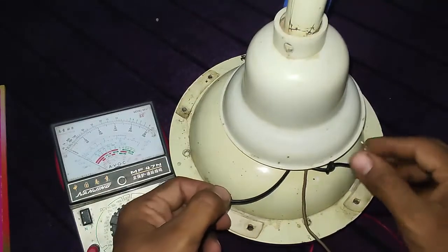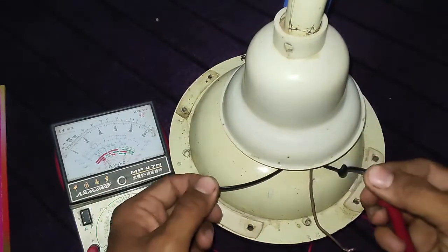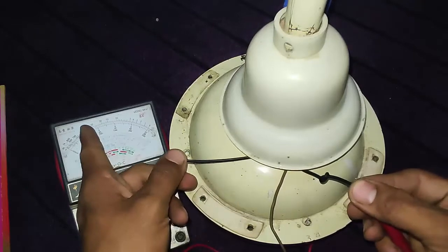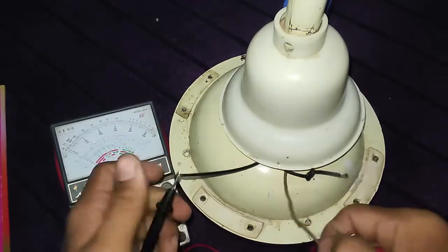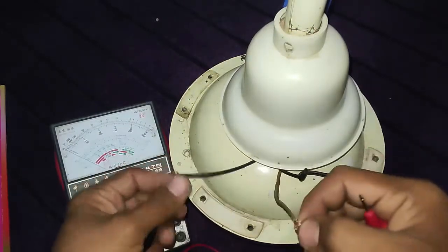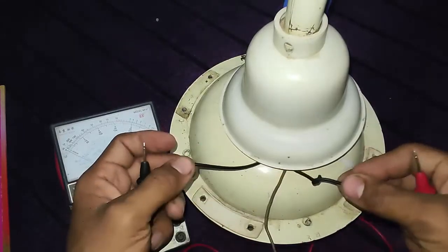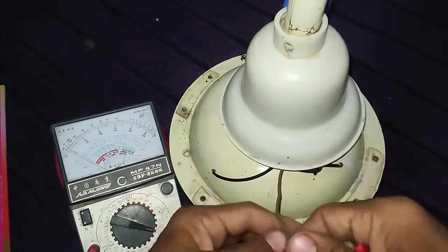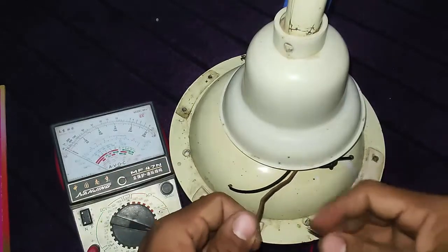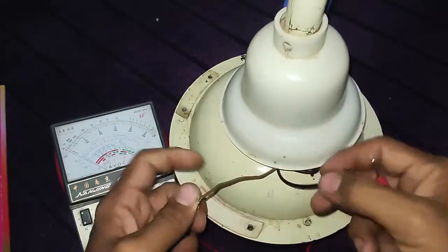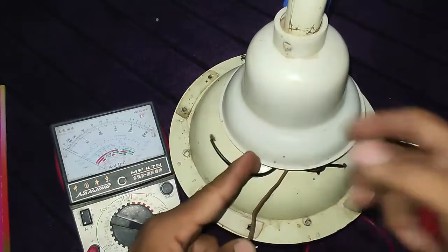These two wires have high resistance, so this one is common, because these two wires have high resistance with one another and the third will be common. The common and the running resistance will be low and the common and starting resistance will be high.